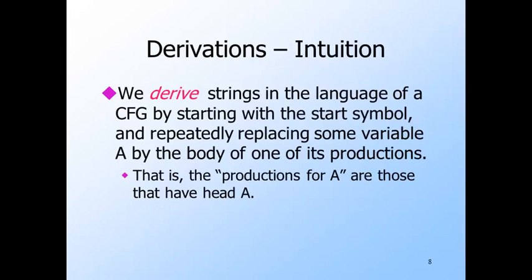A derivation consists of a sequence of strings that typically have both terminals and variables, although they could have only one kind of symbol or even be empty. We start with the string consisting of just the start symbol. At each step, we find a variable to replace, say A. The productions for A — those that have A on the left side, the head of the production — we replace this A by the right side, or body, of the production. We can repeat the process as many times as we like, until we are left with only terminals, at which point no replacement is possible, and we have generated a string that is in the language of the grammar.